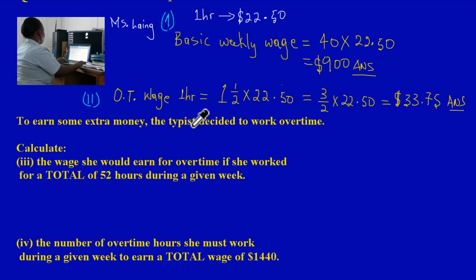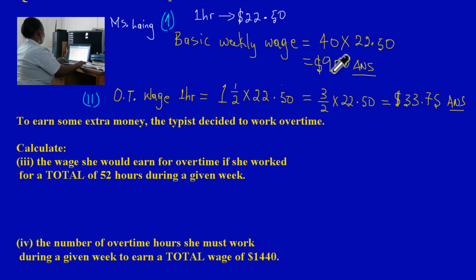Now here they're stating that to earn some extra money, the typist decides to work overtime. This makes sense because when we calculated her basic weekly wage it came out to $900, and if you're speaking about Jamaican currency this wouldn't be a lot of money — so we can see why she's working extra hours to get some extra money.